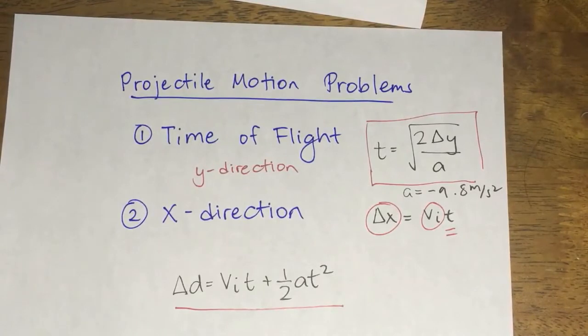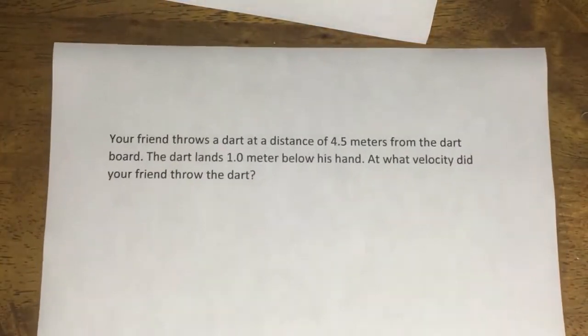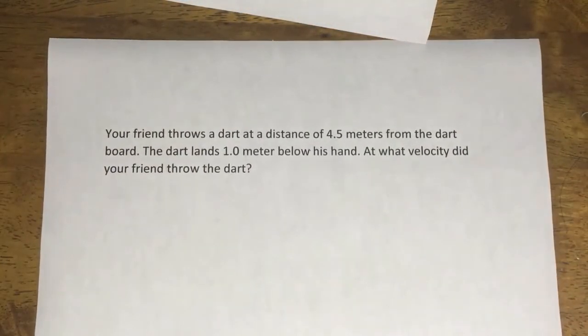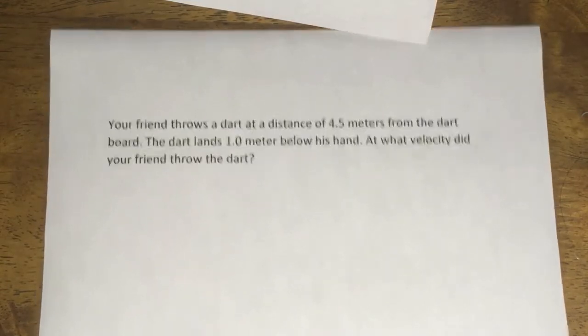So two easy steps. Let's try to solve a few problems related to it. First problem: Your friend throws a dart at a distance of 4.5 meters from the dartboard. The dart lands 1 meter below his hand. At what velocity did your friend throw the dart?